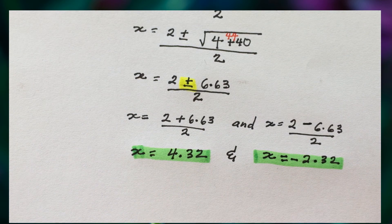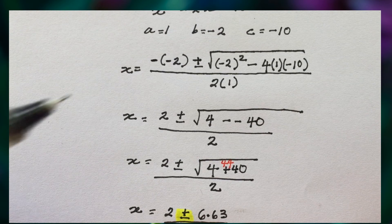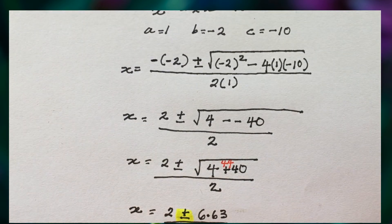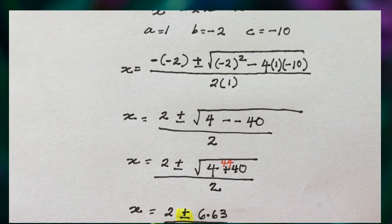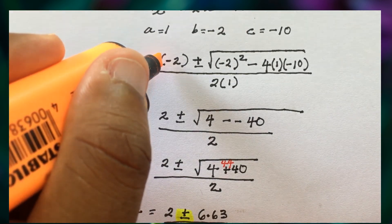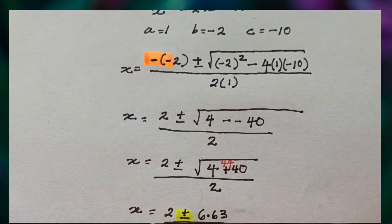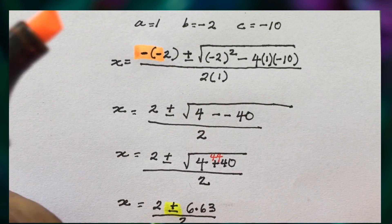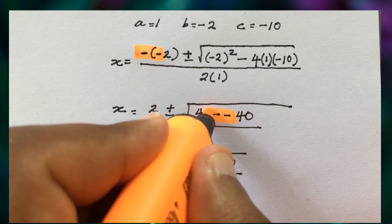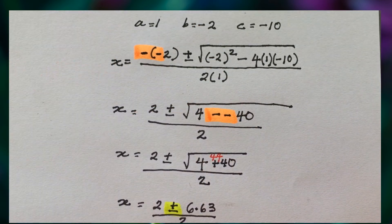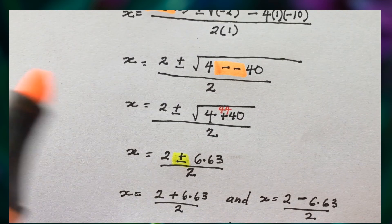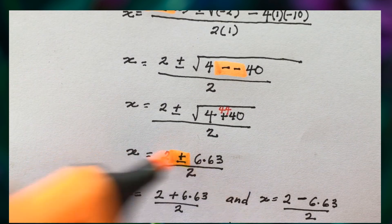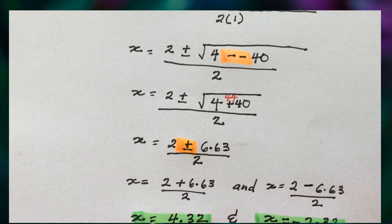So x is approximately 4.32 and x is approximately negative 2.32 — those are our two values of x. Remember these key places where errors happen: the negative on the b value, the signs when squaring, and the signs when multiplying. That's it for example one.